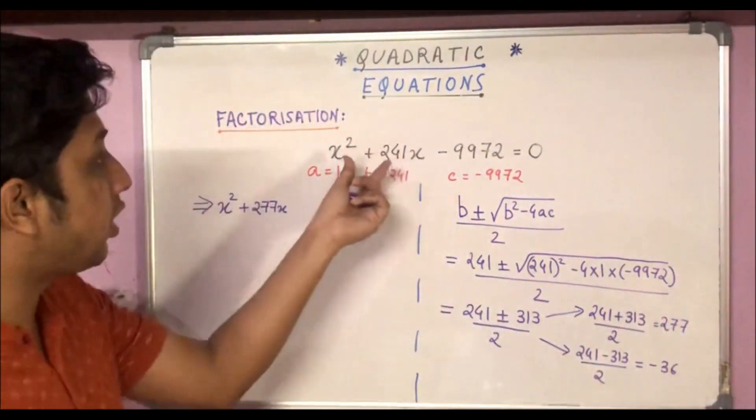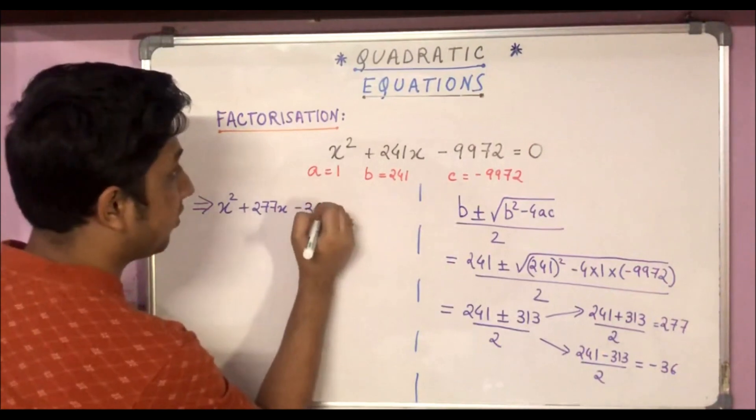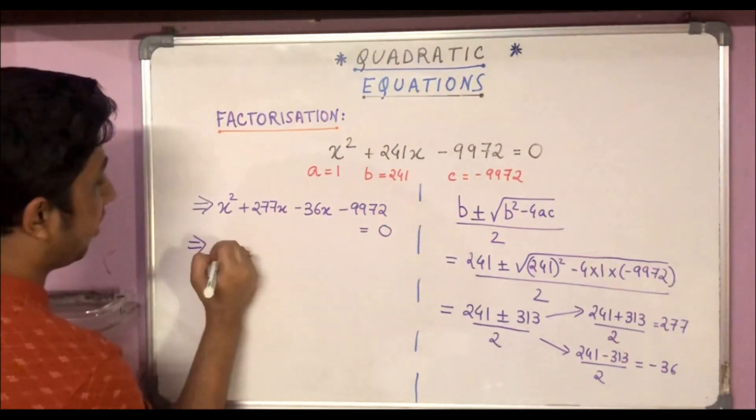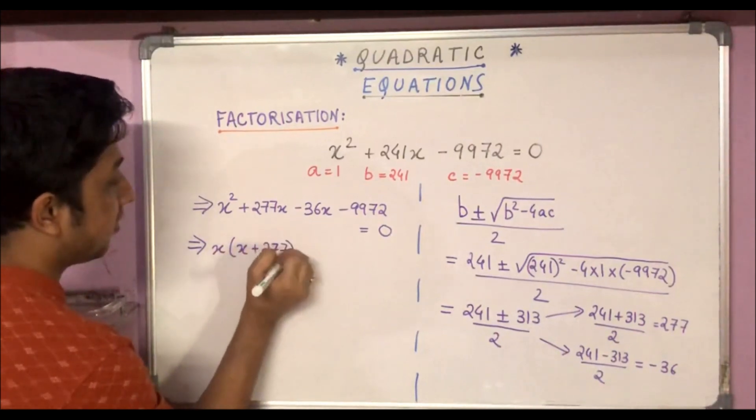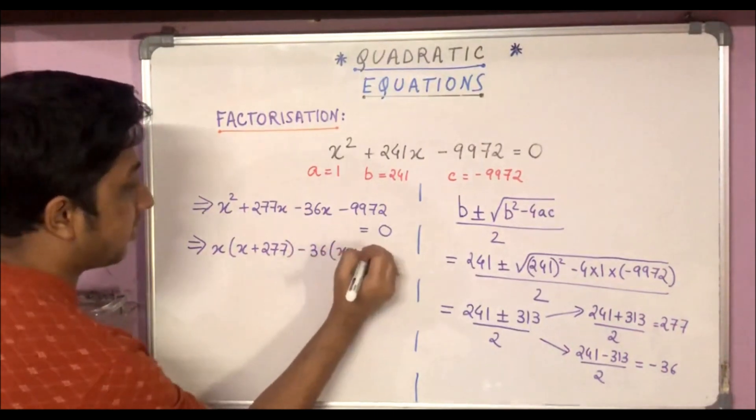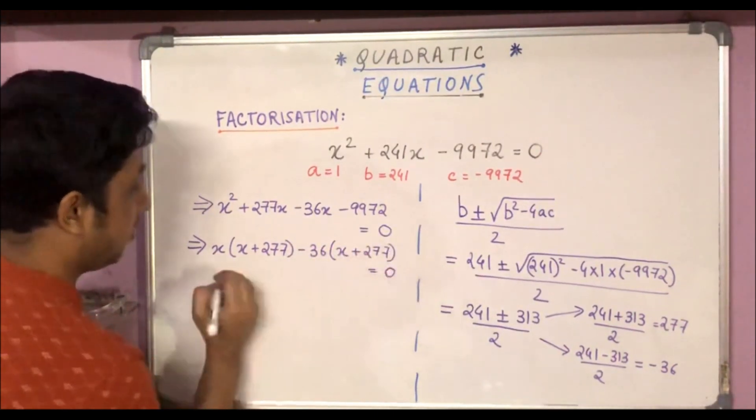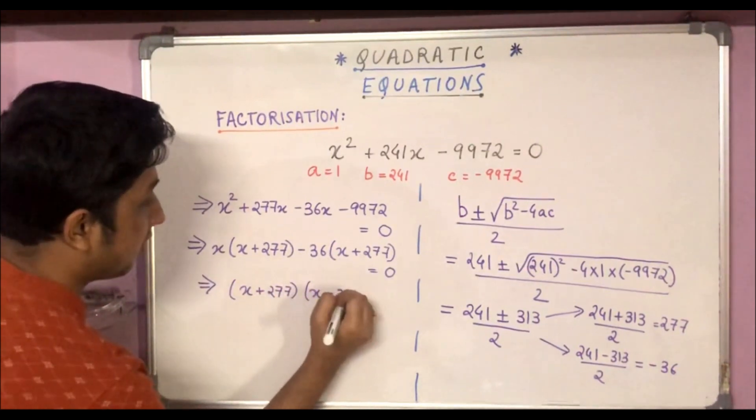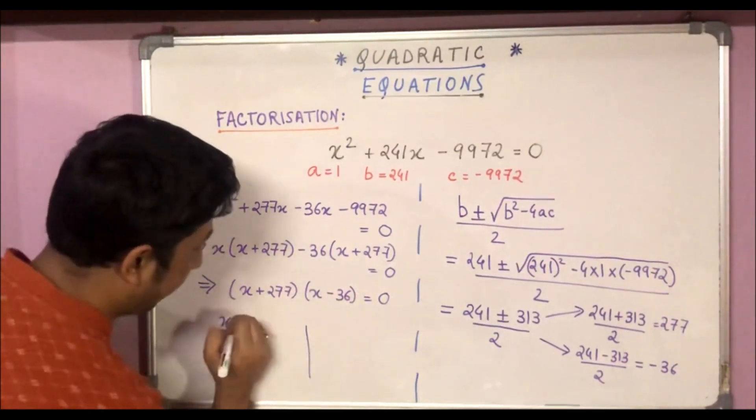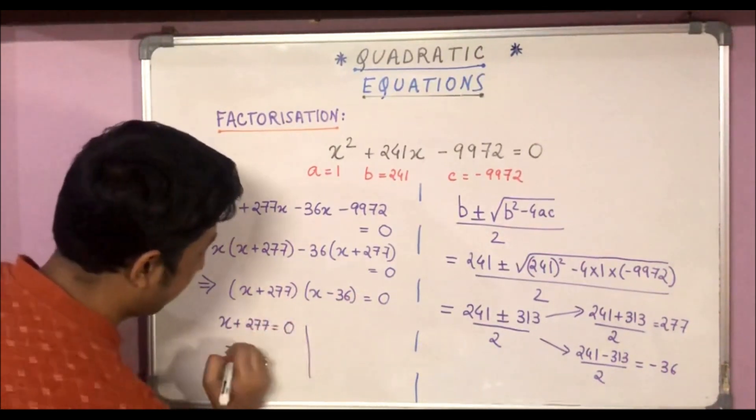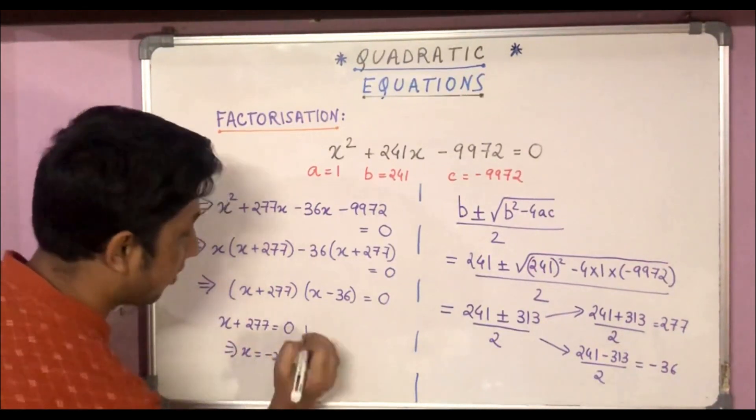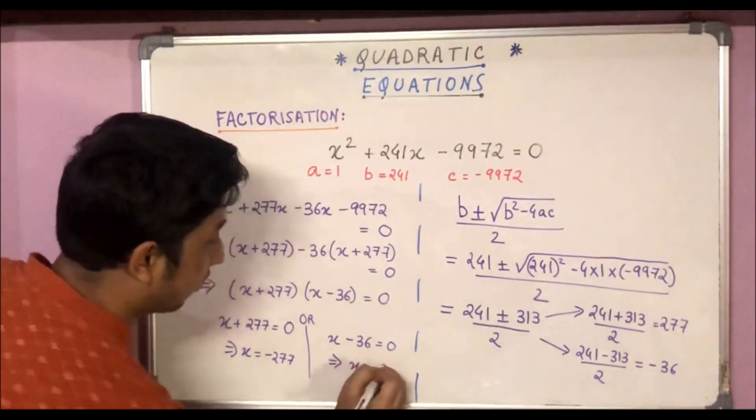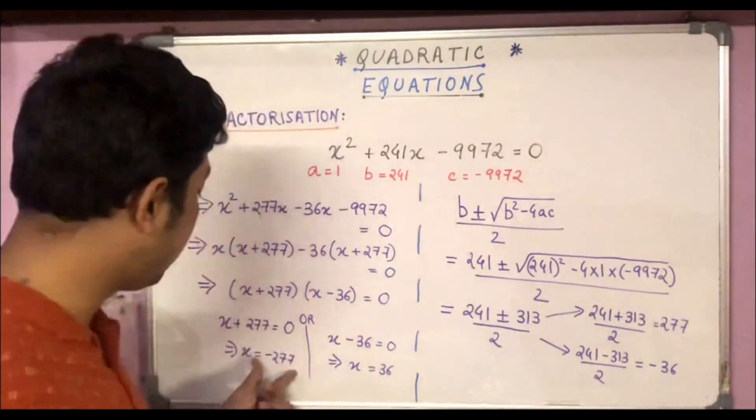The values are 277 and -36. So we'll break plus 241x into plus 277x minus 36x. So x² + 277x - 36x - 9972 = 0. Now taking common, x(x + 277) - 36(x + 277) = 0. So (x + 277)(x - 36) = 0. Using the zero product rule, either x + 277 = 0, so x = -277, or x - 36 = 0, so x = 36. So we have the two roots: 36 and -277.